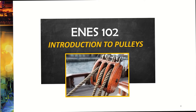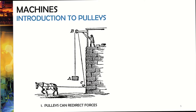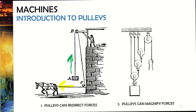Let's do a brief introduction to pulleys, because these are ubiquitous and extremely important not only today but throughout human history. Pulleys can do two things. The first is they can redirect forces — a horse moving horizontally can supply force to lift a box vertically. So pulleys can turn a horizontal force into a vertical force. Secondly, pulleys can magnify forces.